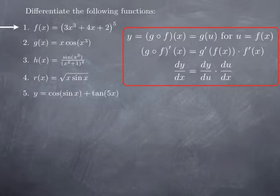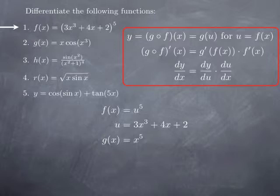So how is this formed? This is a function of the form u to the fifth, where u is 3x cubed plus 4x plus 2. In other words, this function u is plugged inside the power 5 function. Let's call that g of x equals x to the fifth.